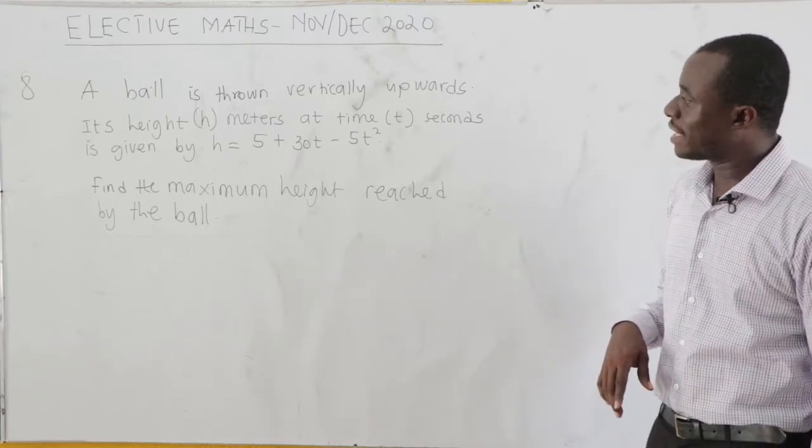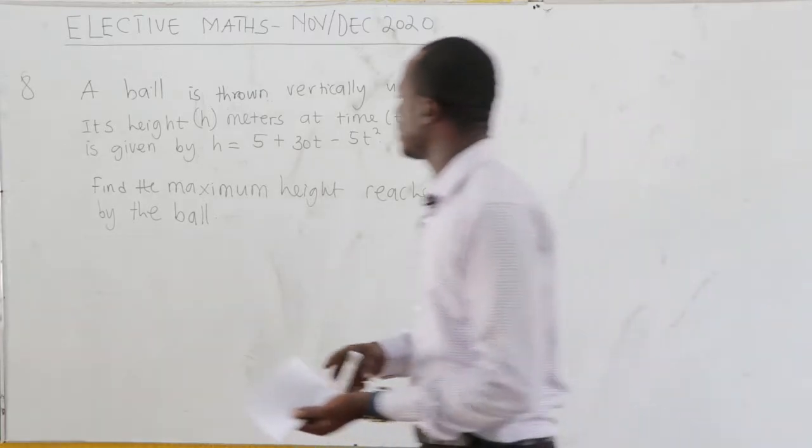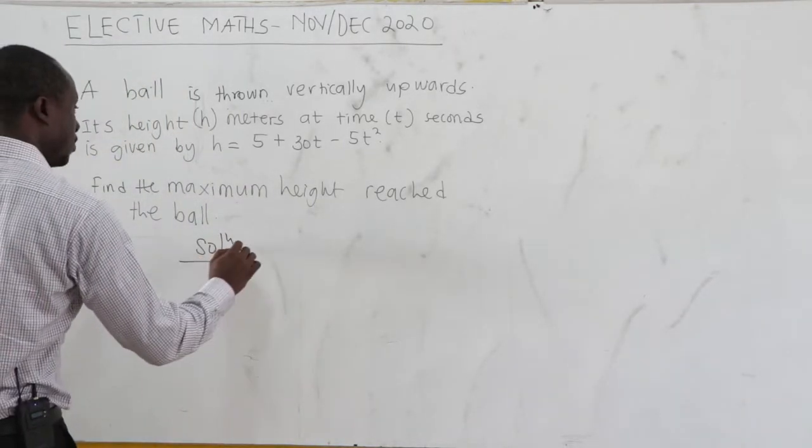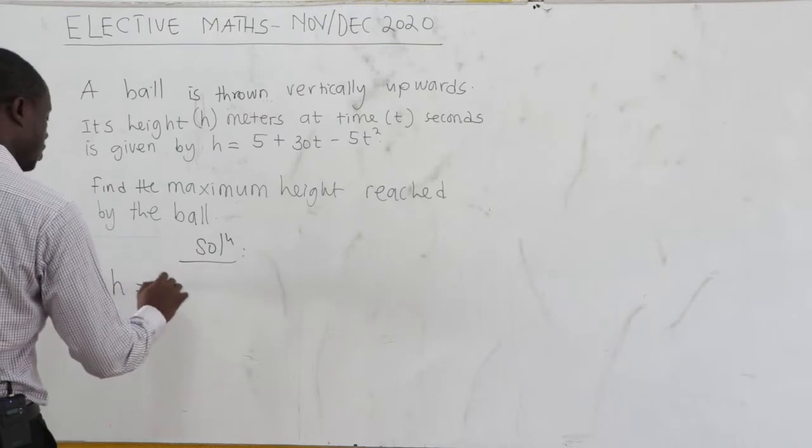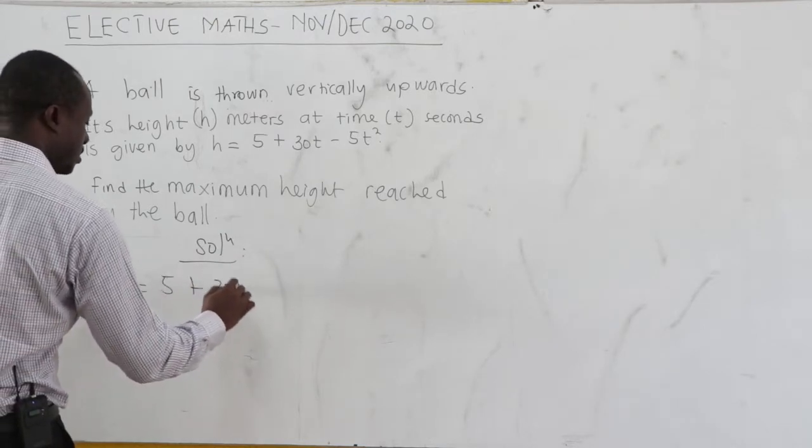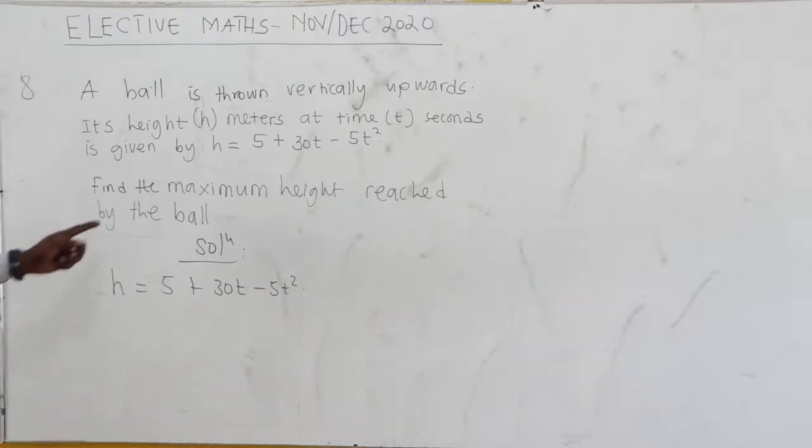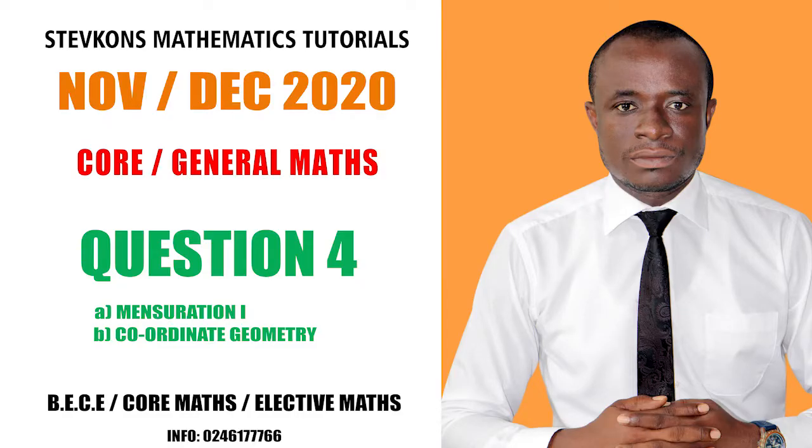A ball is thrown vertically upwards. Its height h in meters at time t seconds is given by h = 5 + 30t - 5t². We need to find the maximum height reached by the ball.